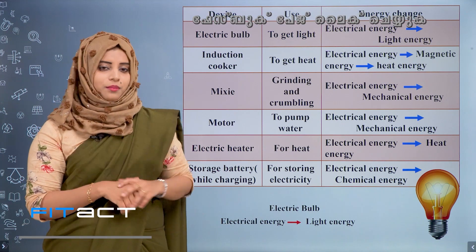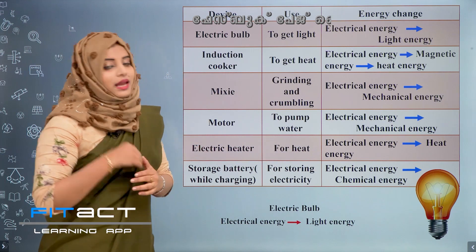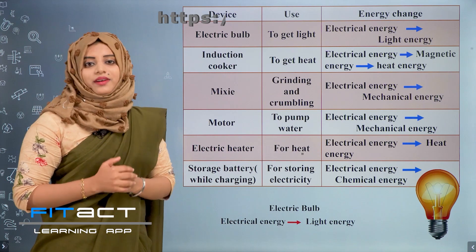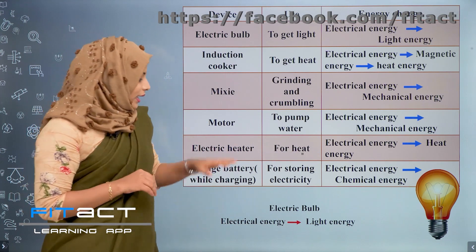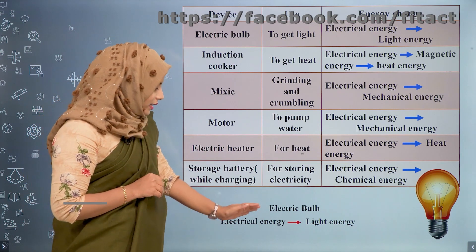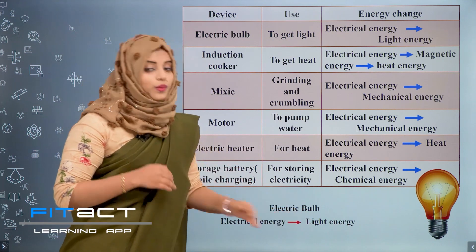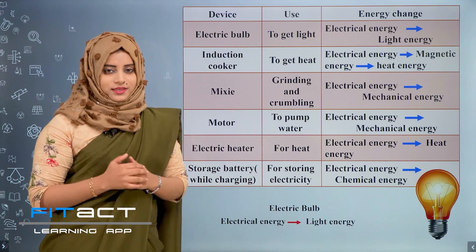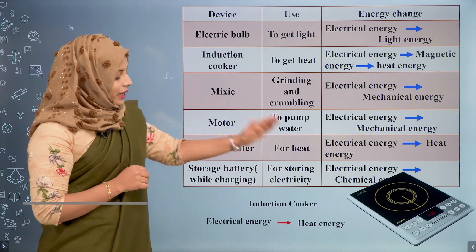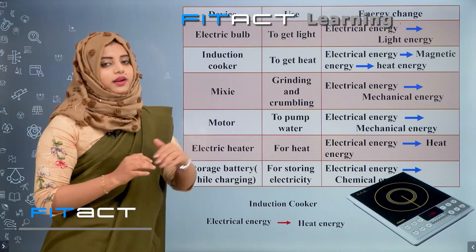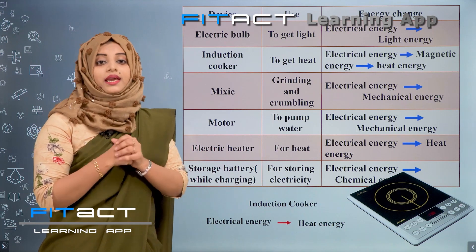For example, an electric bulb demonstrates the lighting effect — electrical energy is converted into light energy. Next, an induction cooker is an example where electrical energy is converted into heat energy for cooking.